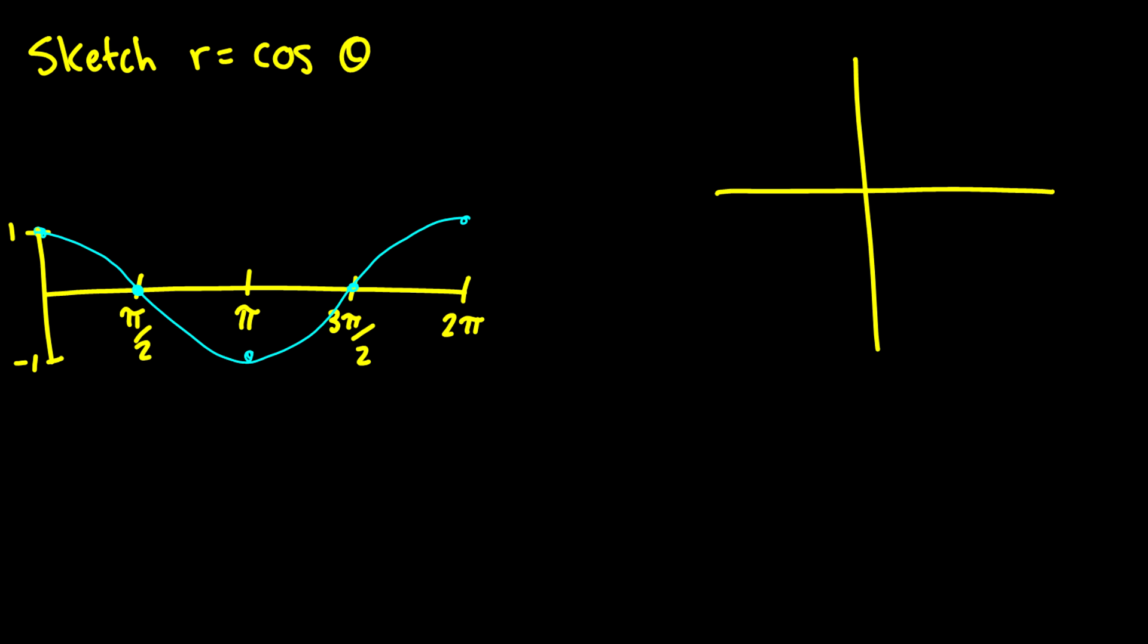Now how do we translate that over to a graph? Well we have some points on this graph. We have pi over 2 up here. We have 3 pi over 2 down here. We have pi here and we have 2 pi slash 0 at this point. At 0 we're going to have it at this point 1. And as we move towards pi over 2, so as our angle moves this way we're going to get closer and closer to the point 0. What happens is we have a graph that looks a little bit like this.